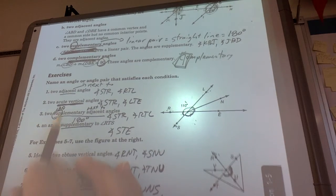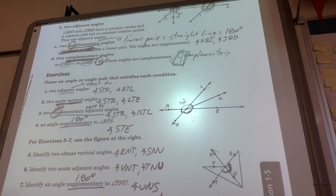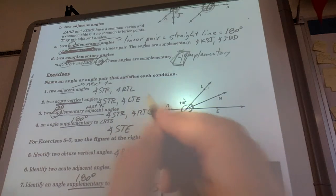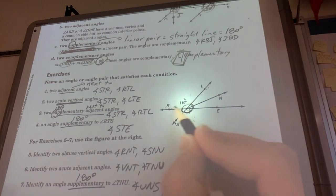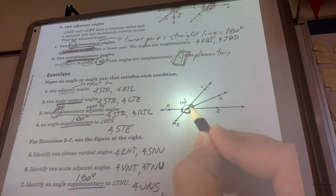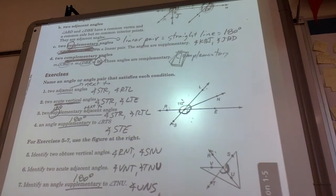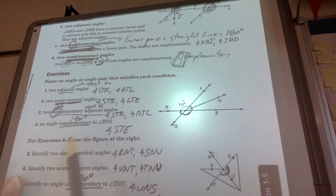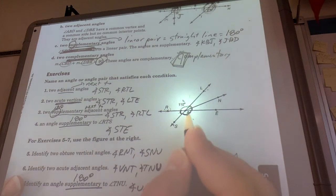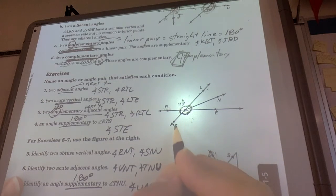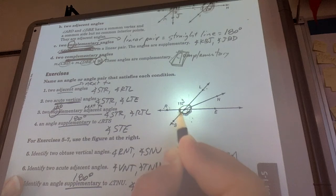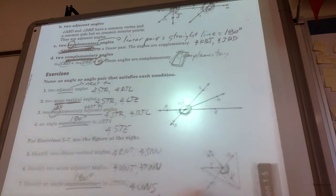Number three, two supplementary, so 180, adjacent angles. So they're next to each other and are supplementary. Well, guess what? What we talked about in number one fits here. STR, RTL. There's your 180. Those the only two answers? No. There's several there. We're just going to use those. And angle supplementary to RTS. So we decided to change it up and go STE and talk about this bottom one right there. Supplementary is 180.